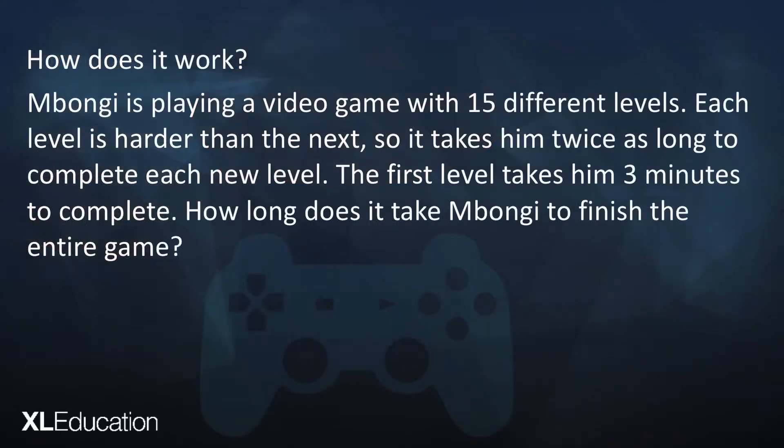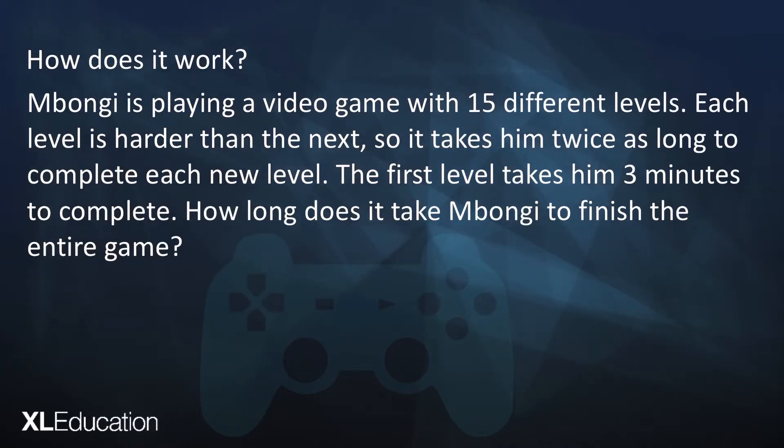So let's see how it works. Mbongi is playing a video game with 15 different levels. Each level is harder than the next, so it takes him twice as long to complete each new level. The first level takes him 3 minutes to complete. How long does it take Mbongi to finish the entire game? To finish the entire game, he has to complete each level, so the total time is the sum of all the time he took to complete each level.